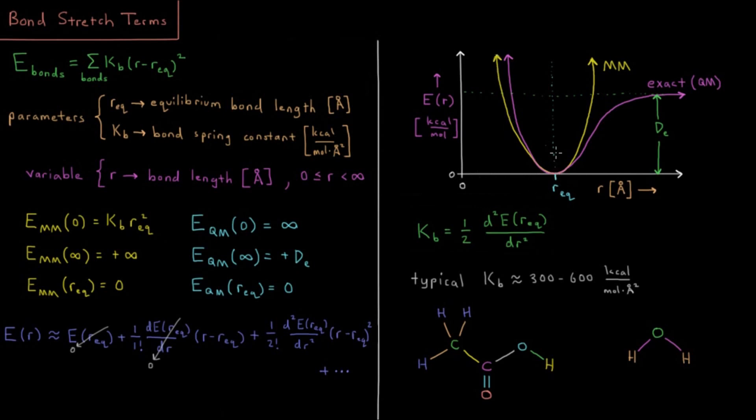If we define the zero to be the equilibrium bond energy, then at short range we go up very, very high, very quickly. At long range, we go up, but then it eventually decays out to some maximum value where the bond is dissociated, where we have the dissociation energy indicating that height.